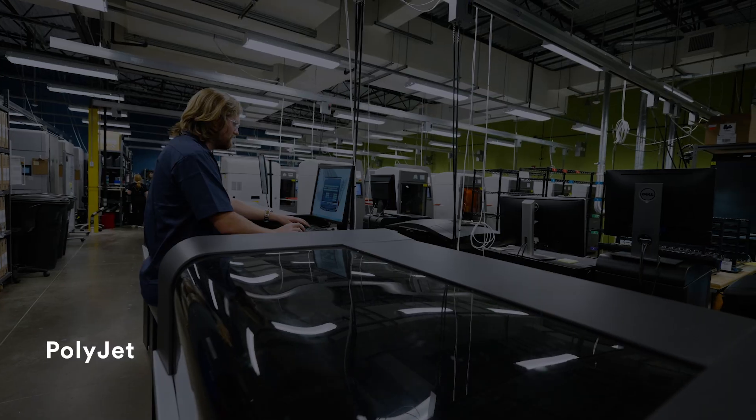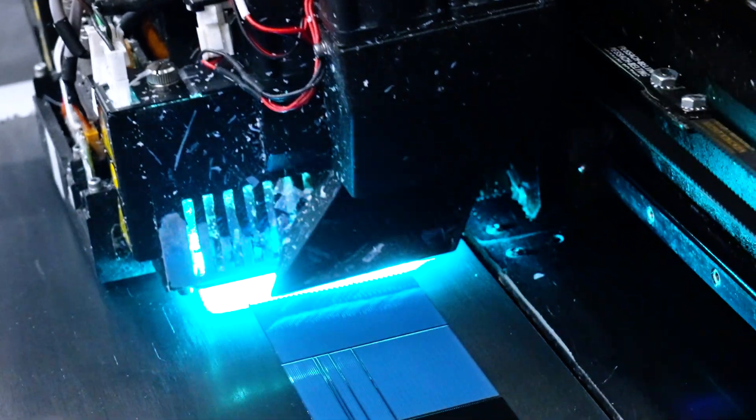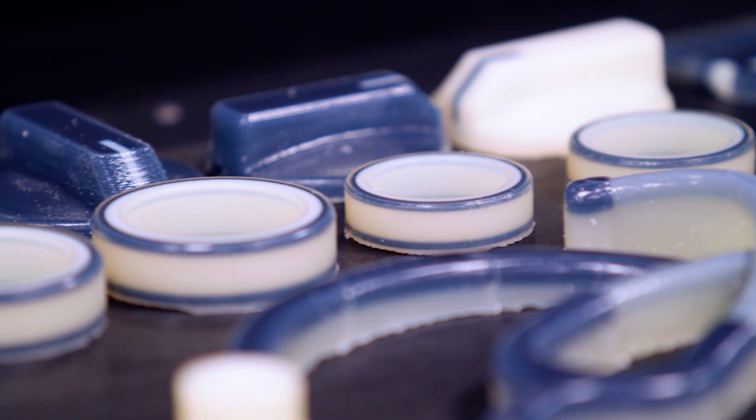Our PolyJet 3D printers can print highly complex geometries with variable properties such as colors and hardnesses. The technology is often used to prototype over-molded designs.